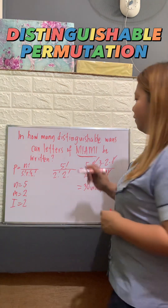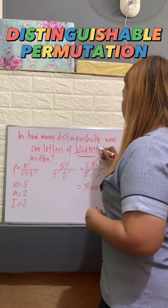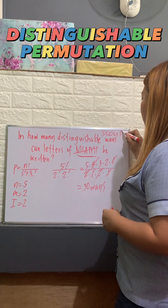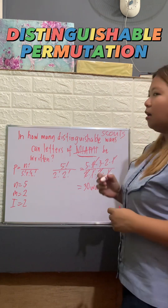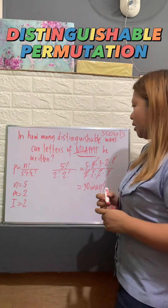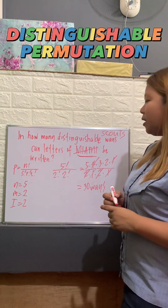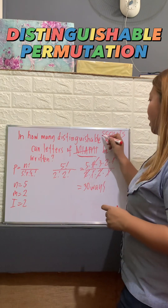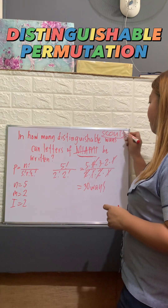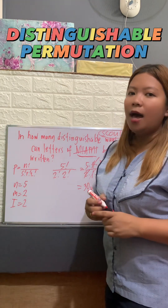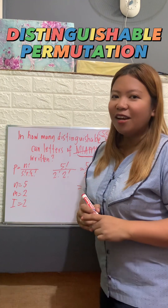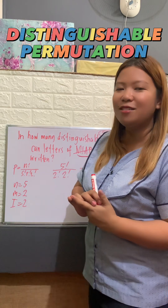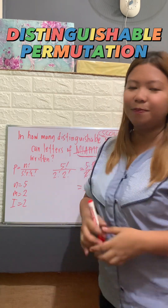Now, what if your word is SCOUTS? How many distinguishable ways can you arrange the letters of SCOUTS? Comment your answer in the comment section, and please like and share this video. Thank you.